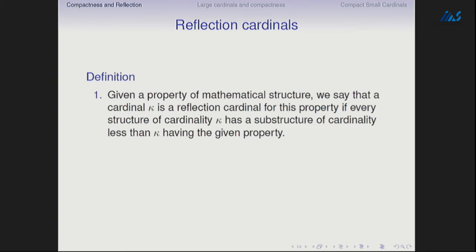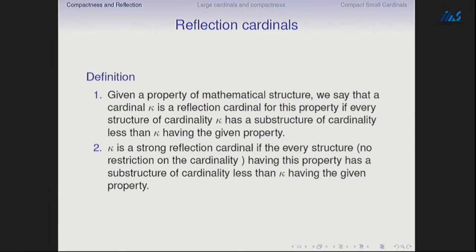A few standard definitions. Given a property of mathematical structures, we say that the cardinal κ is a reflection cardinal for this property if every structure of cardinality κ having the property has a substructure of cardinality less than κ having the given property. κ is a strong reflection cardinal if the same holds for every structure with no restriction on cardinality — namely, every structure having the property has a substructure of cardinality less than κ having the given property.